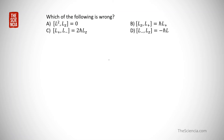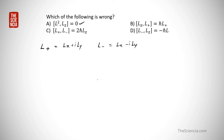The next problem asks which of the following is wrong, related to commutator operators. Option A — the commutator of L-squared and Lz equals zero — is correct. We now check options B, C, and D. L-plus and L-minus are ladder operators where L-plus equals Lx plus i times Ly, and L-minus equals Lx minus i times Ly. Let's check option B: commutator [Lz, L+].